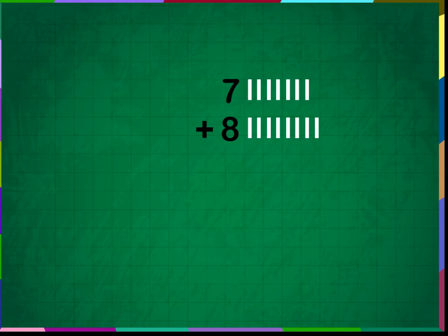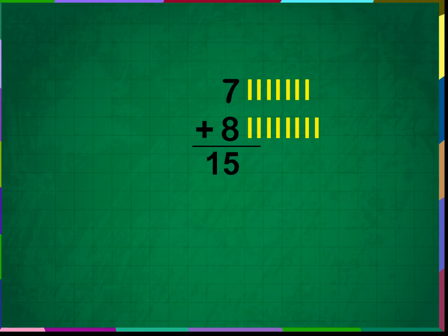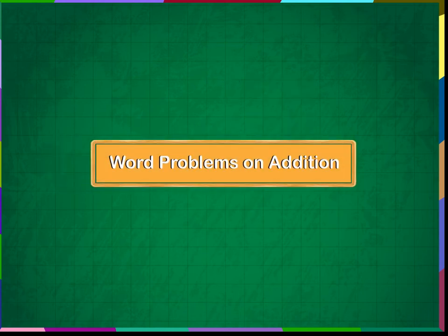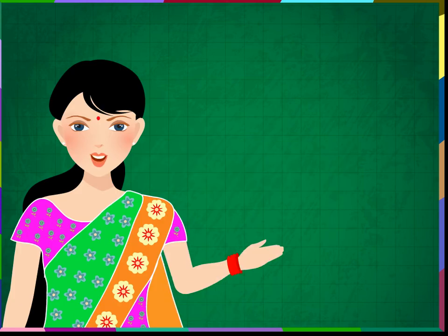Draw 7 small lines beside the number 7. Again draw 8 small lines beside the number 8. Let us count all the lines together: 1, 2, 3, 4, 5, 6, 7, 8, 9, 10, 11, 12, 13, 14, 15. 7 plus 8 is equal to 15. 15 is the answer.